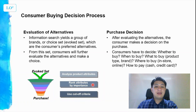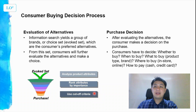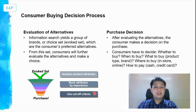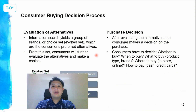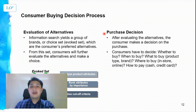Consumers rank product attributes by importance. For example, if buying a laptop for gaming, graphics card performance may be ranked higher. In terms of cutoff criteria, price is often a key factor — if a product is beyond your budget, that becomes a cutoff criterion that eliminates it from consideration.